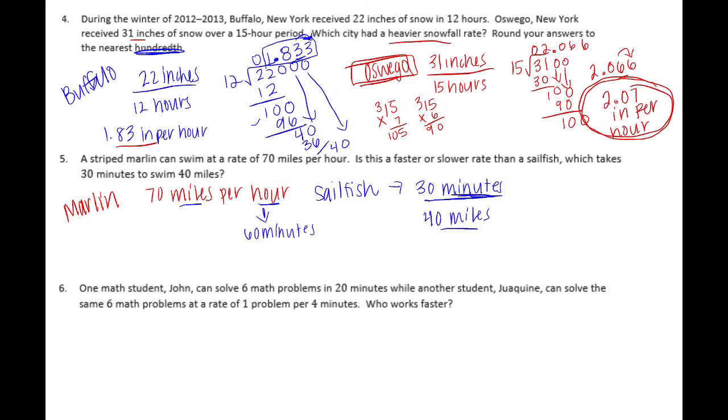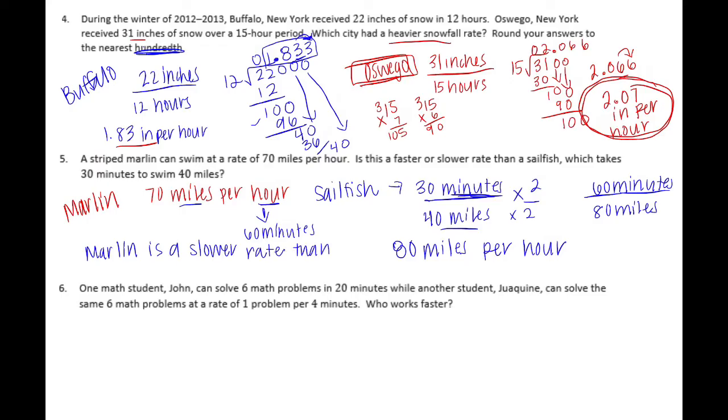This is saying they need to go 70 miles in 60 minutes. This is 30 minutes, which is half, so if I want to get to 60 minutes so that I'm able to compare, I need to multiply by 2 over 2. That gets me to 60 minutes and 40 miles times 2 would be 80 miles. So in one hour or in 60 minutes, the sailfish goes 80 miles per hour. Who is going faster? Is this a faster or slower rate than the sailfish? We would say that the marlin is a slower rate than the sailfish.